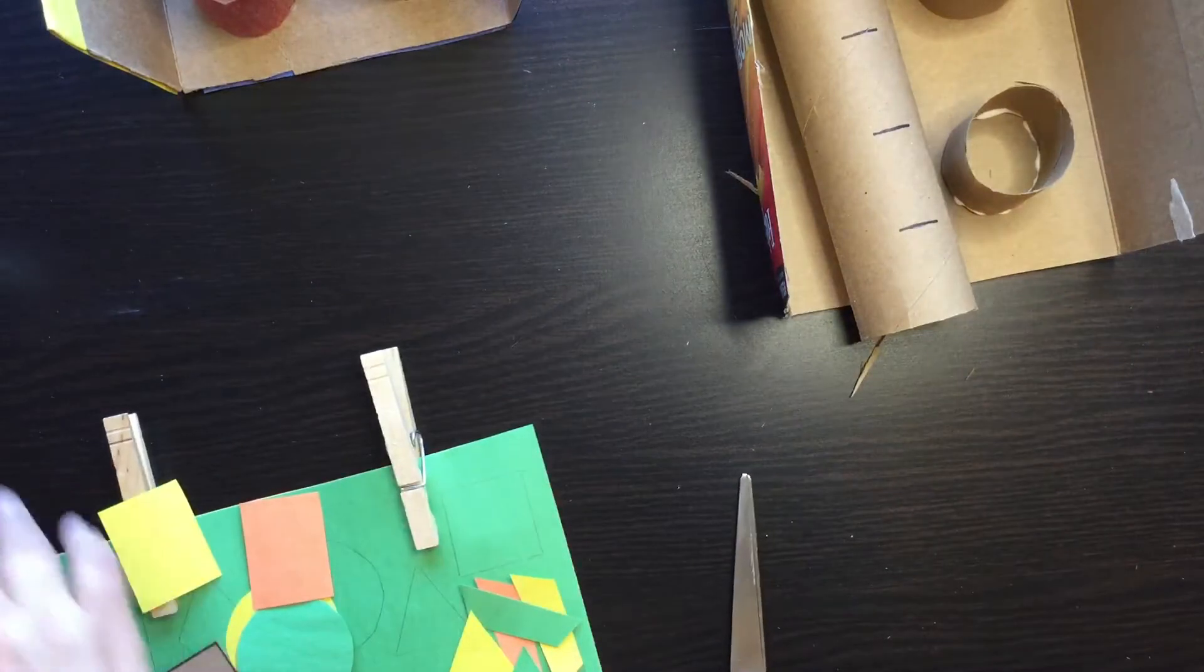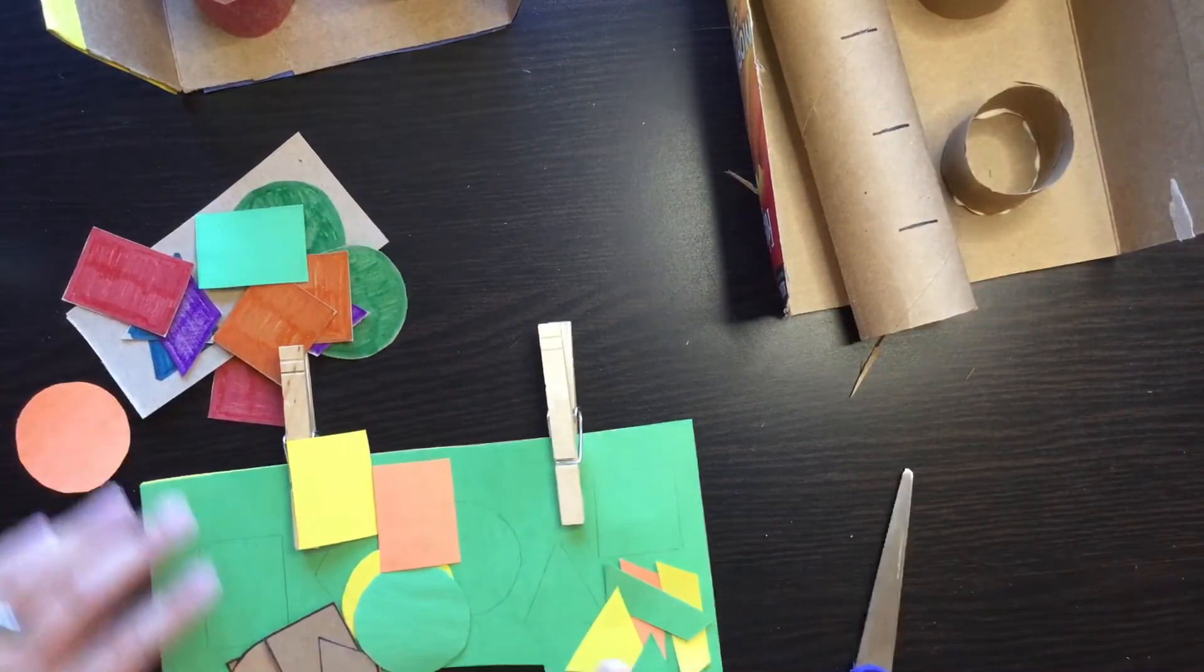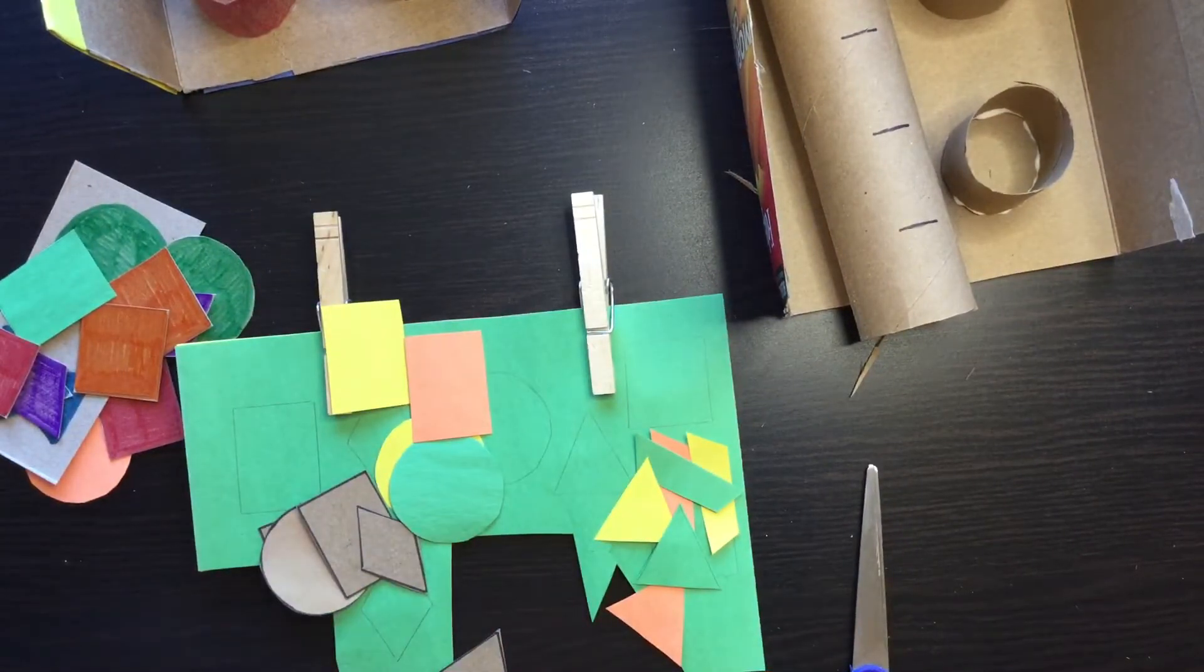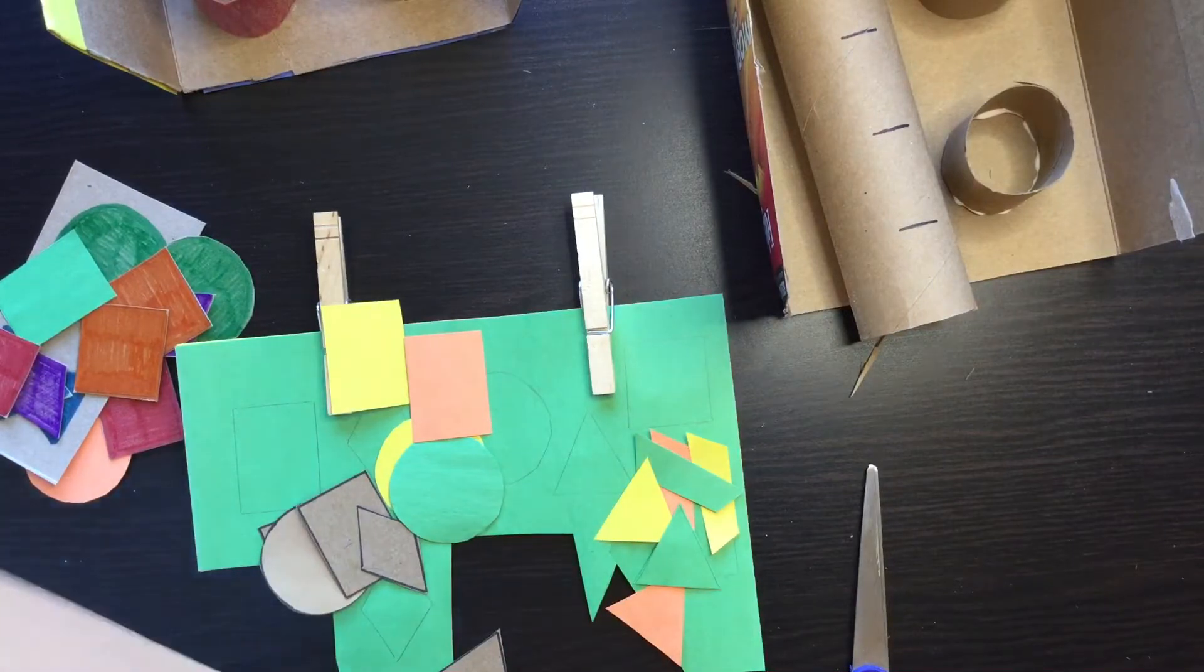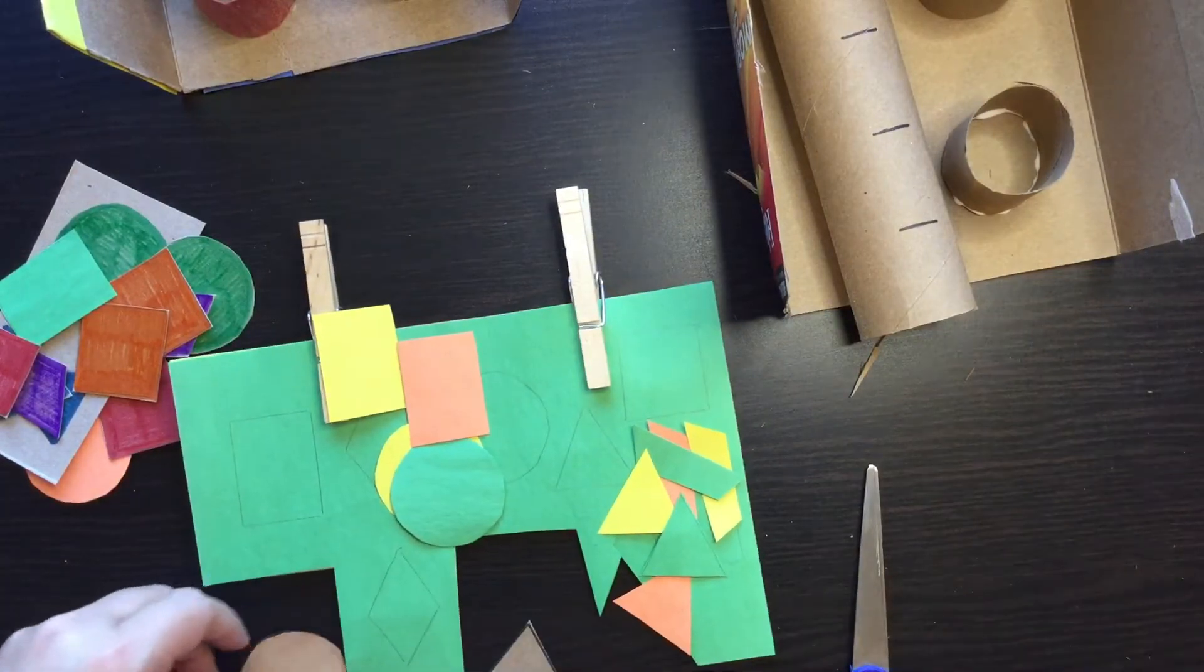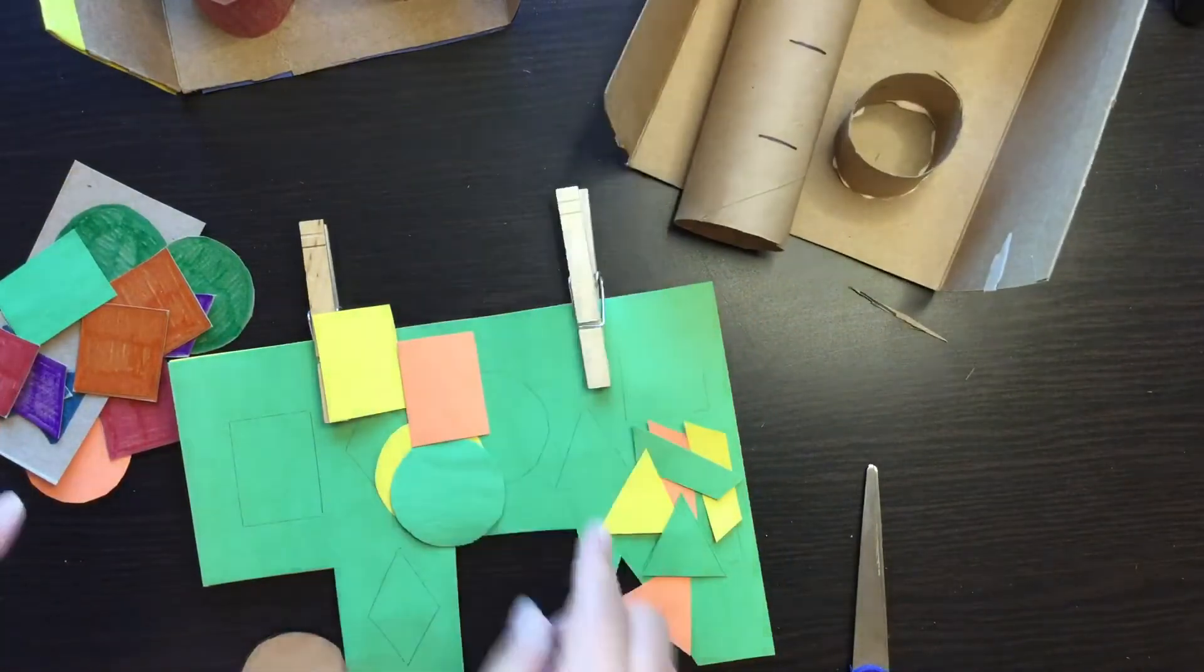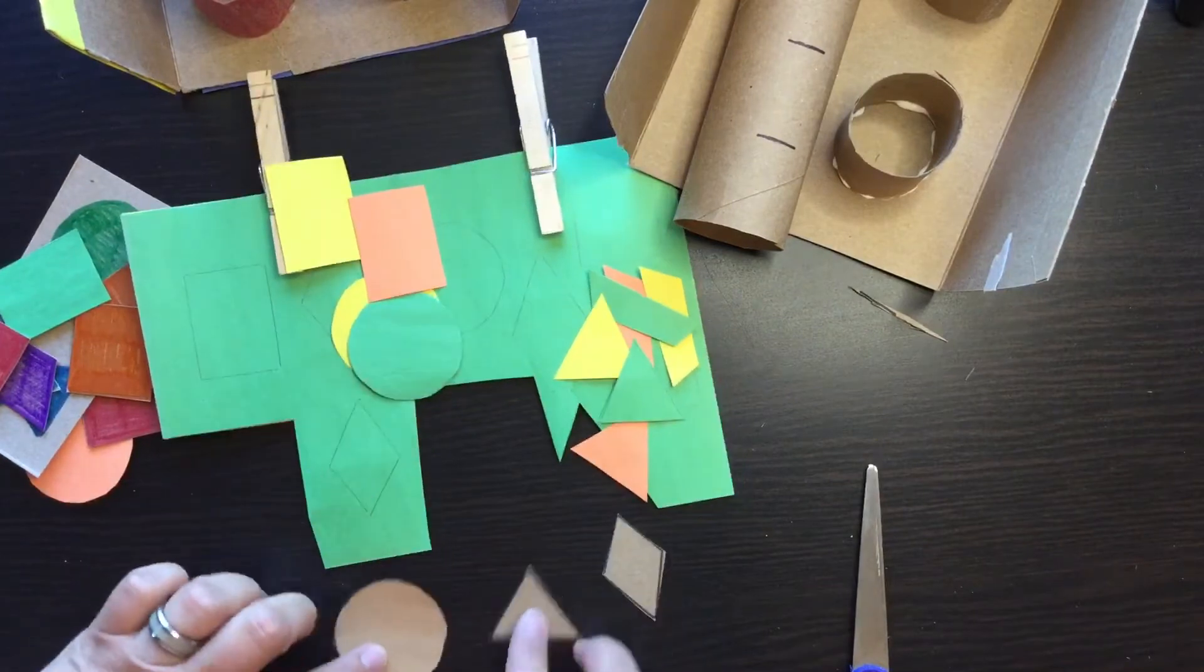Another fun activity that I have is this shape activity that goes along with the sorting activity. In this activity, it has a very simple format. You begin with different shapes that you can either use the scraps from the cutouts of the boxes.